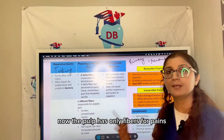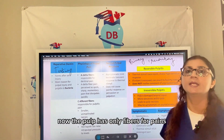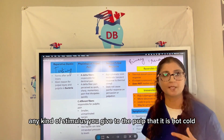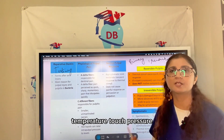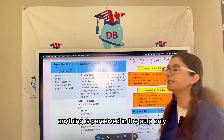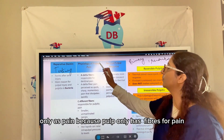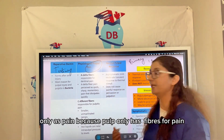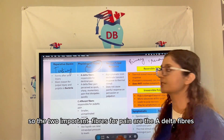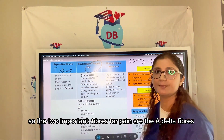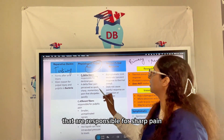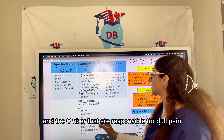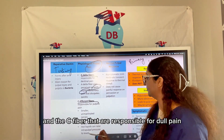The pulp has only nerve fibers for pain, so any stimulus applied to the pulp — whether hot, cold, temperature, touch, or pressure — is perceived only as pain. The two important nerve fibers for pain are the A-delta fiber, responsible for sharp pain, and the C fiber, responsible for dull pain.